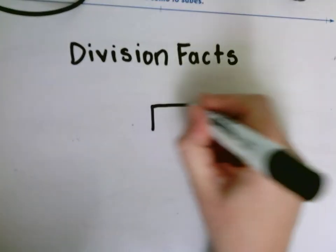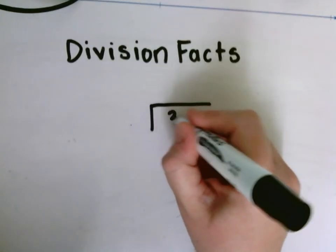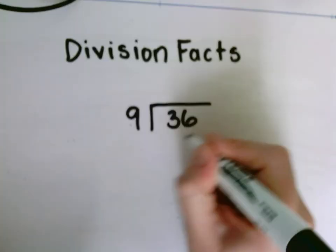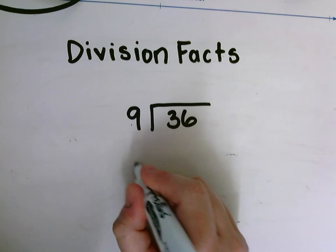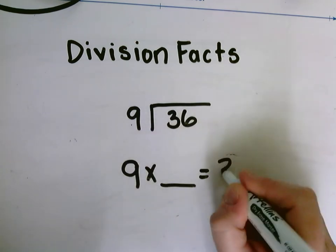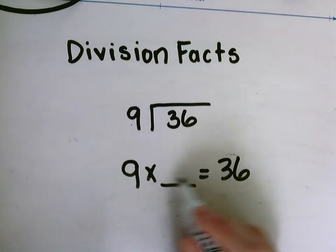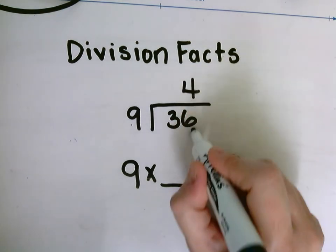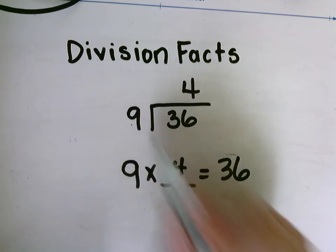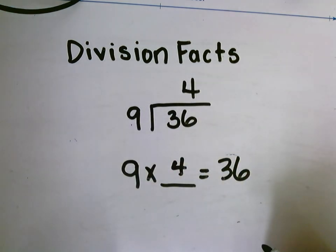If I had the problem of 36 divided by 9, I could think of the same thing, missing factors: 9 times what equals 36? This is the same thing that we did on yesterday's work. Oh, 9 times 4, so 36 divided by 9 equals 4. All right, so good luck today.